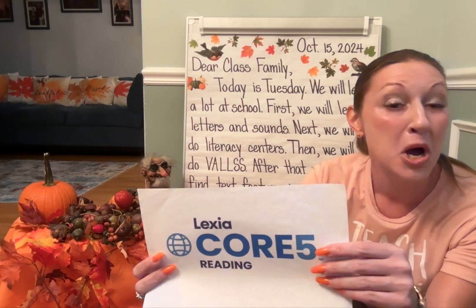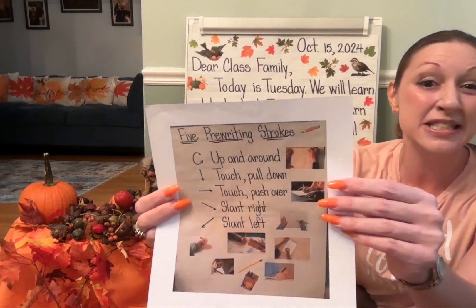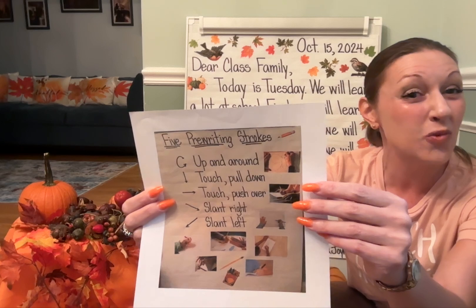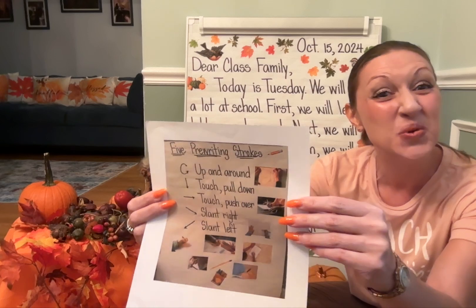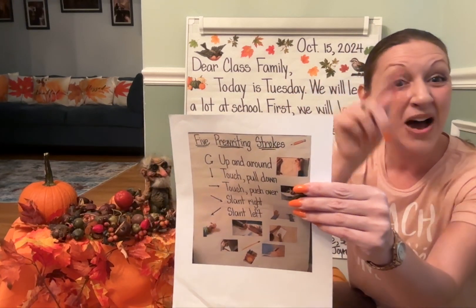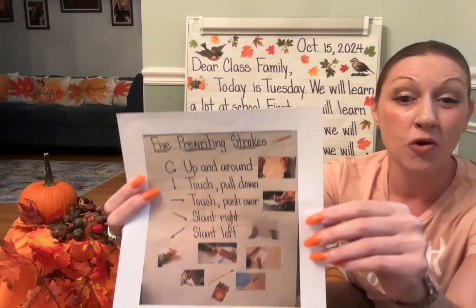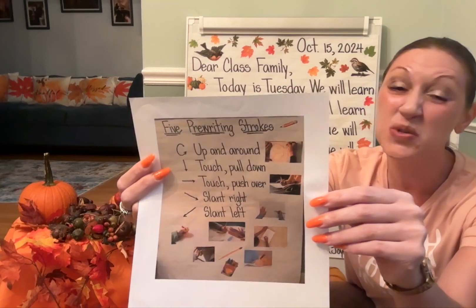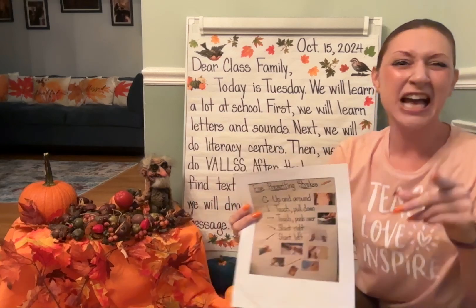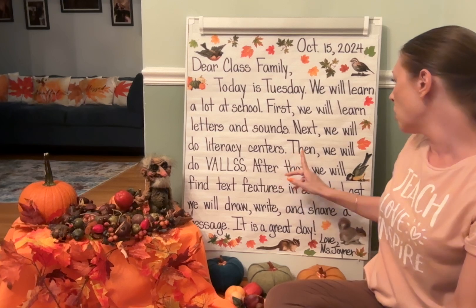Next, we will do literacy centers. You'll log on independently to your iPad for the Lexia Core 5 reading program to pump your brains with knowledge. We'll do other centers within the classroom and practice the five pre-writing strokes when writing letters, drawing pictures, and writing numbers. Sky-write them with me: up, bend around, touch, pull down, touch, push over, slant right, slant left. Remember to hold your pencil with your index finger, middle finger, and thumb and use these five pre-writing strokes — that's what good writers do.